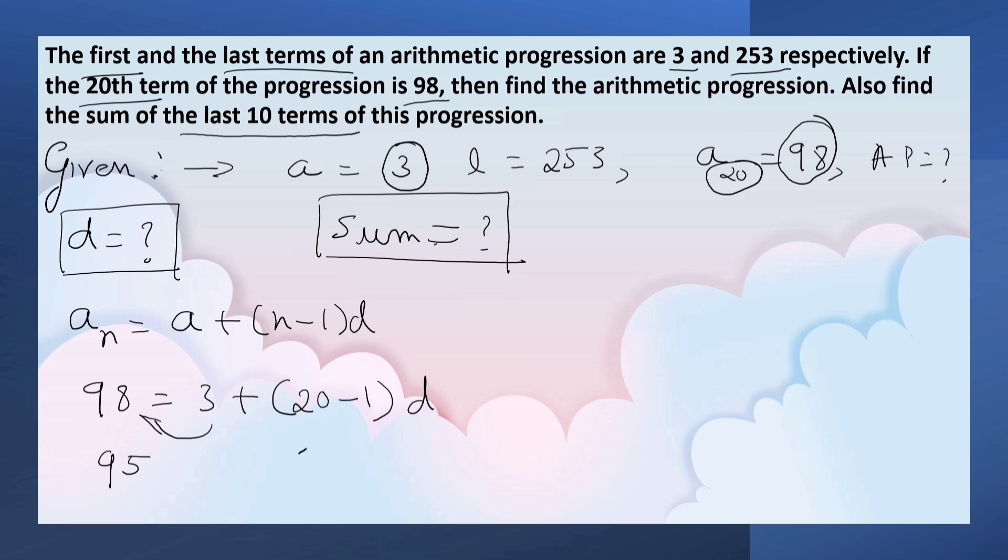Let's transpose 3 to this side: 98 minus 3, that is 95, equals 20 minus 1, that is 19, times D. This implies that D equals 95 by 19, which equals 5.